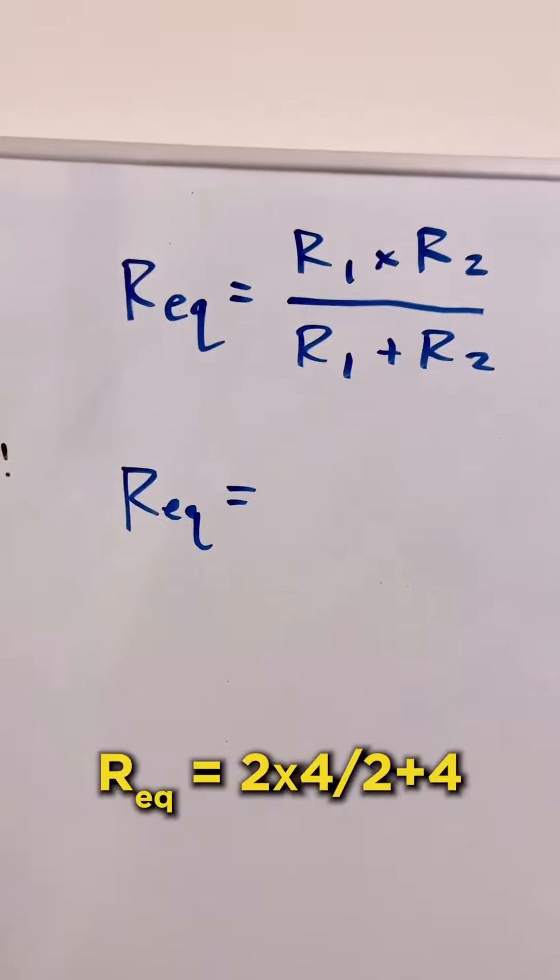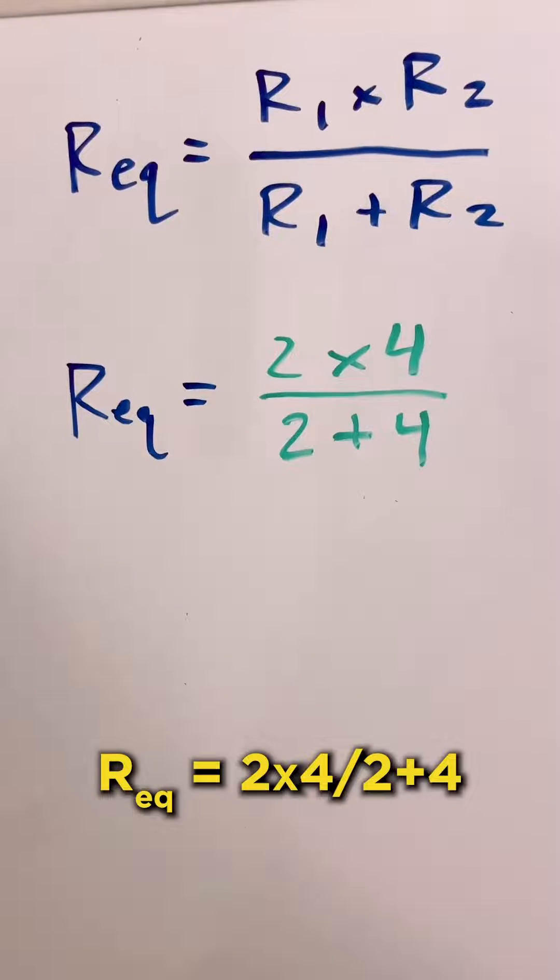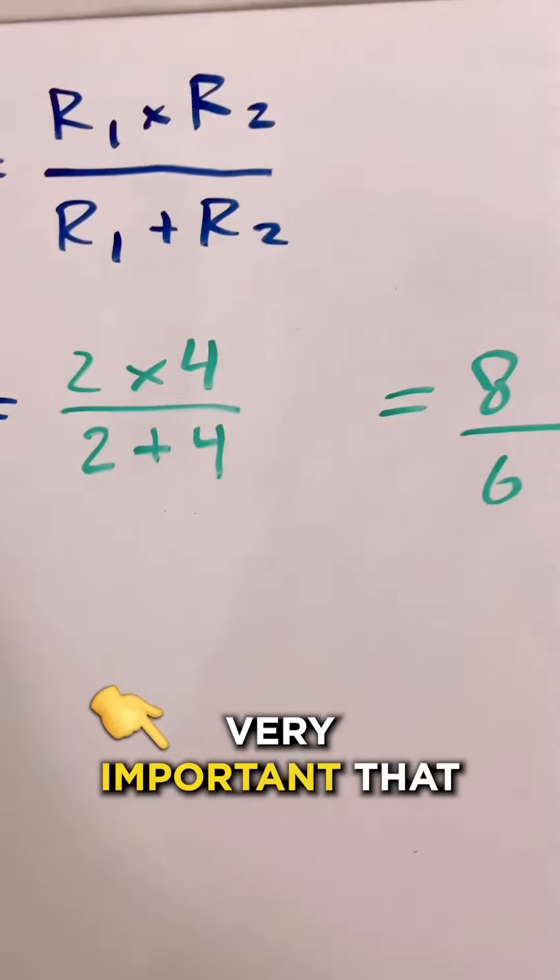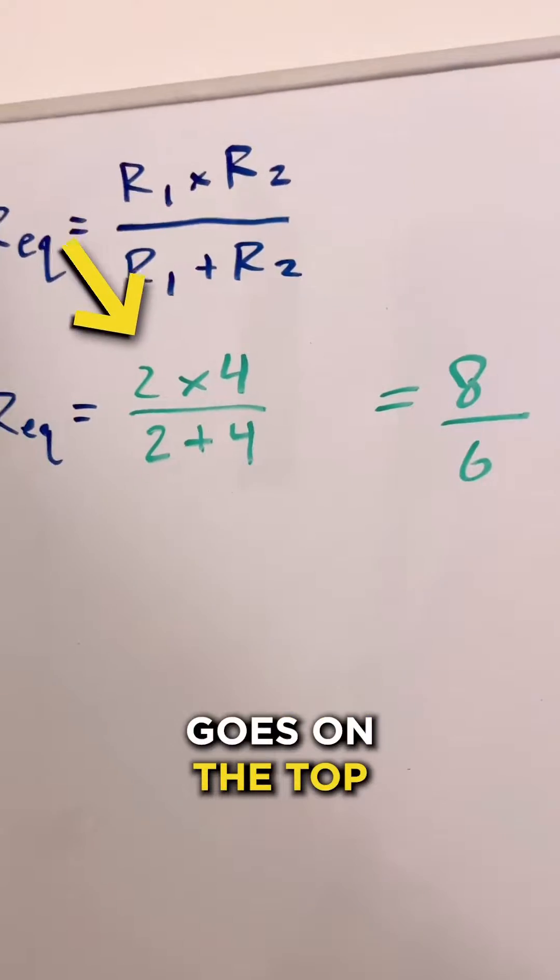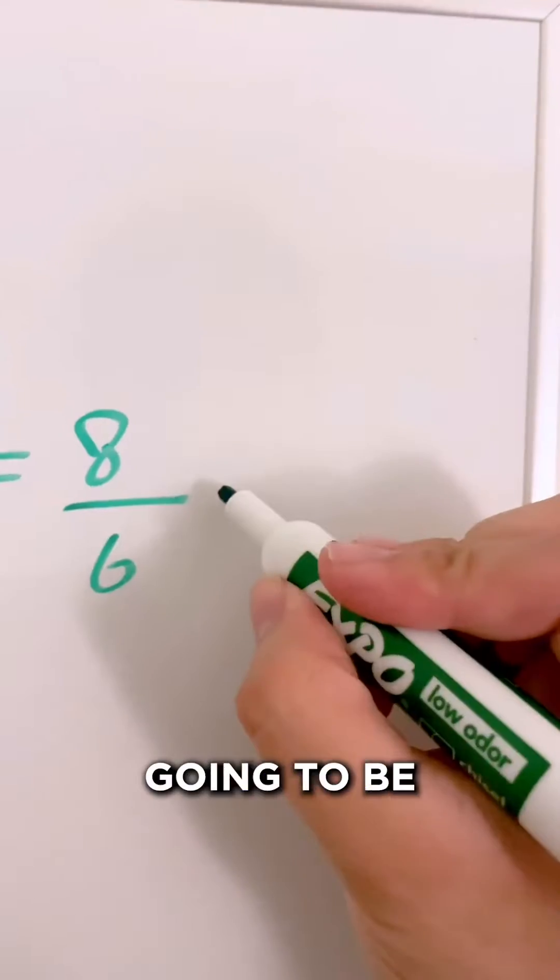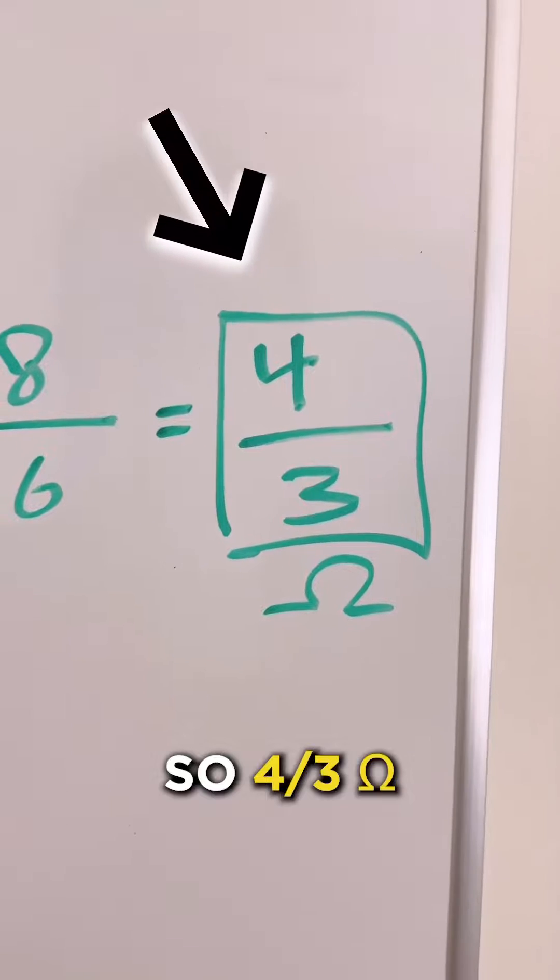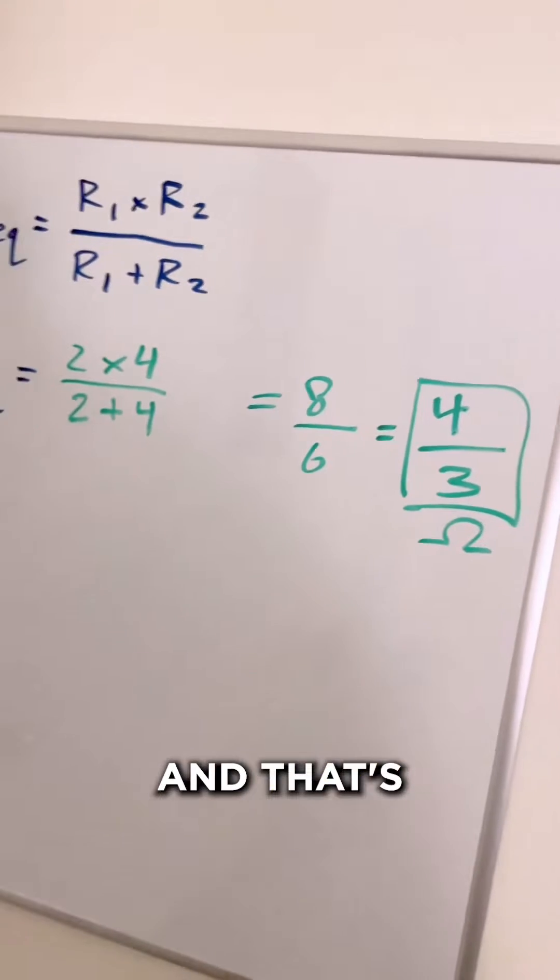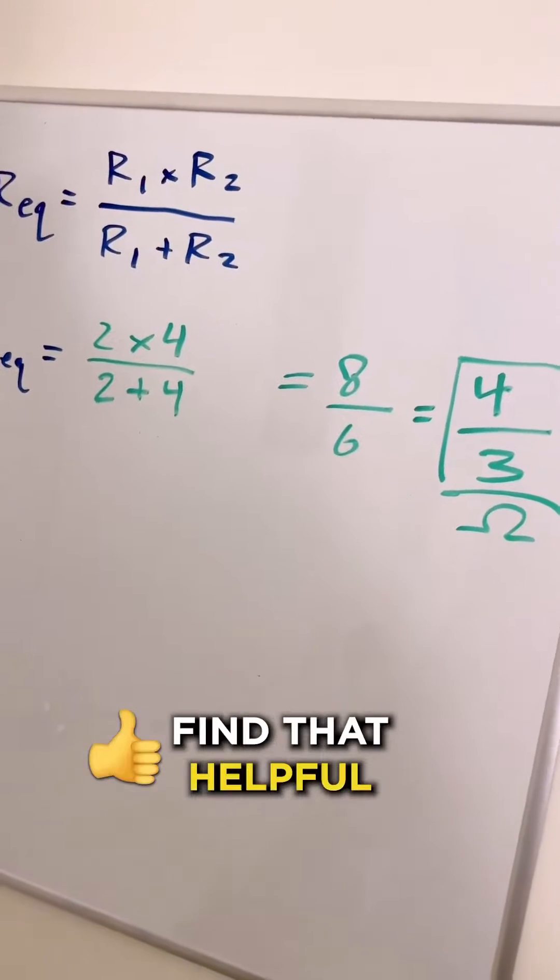So R_EQ is then going to equal two times four over two plus four. And it's very important that multiplication goes on the top and addition goes on the bottom. So that's going to be eight over six. Simplify that down, so four thirds ohms. And that's going to be the answer. I hope that you find that helpful. Best of luck.